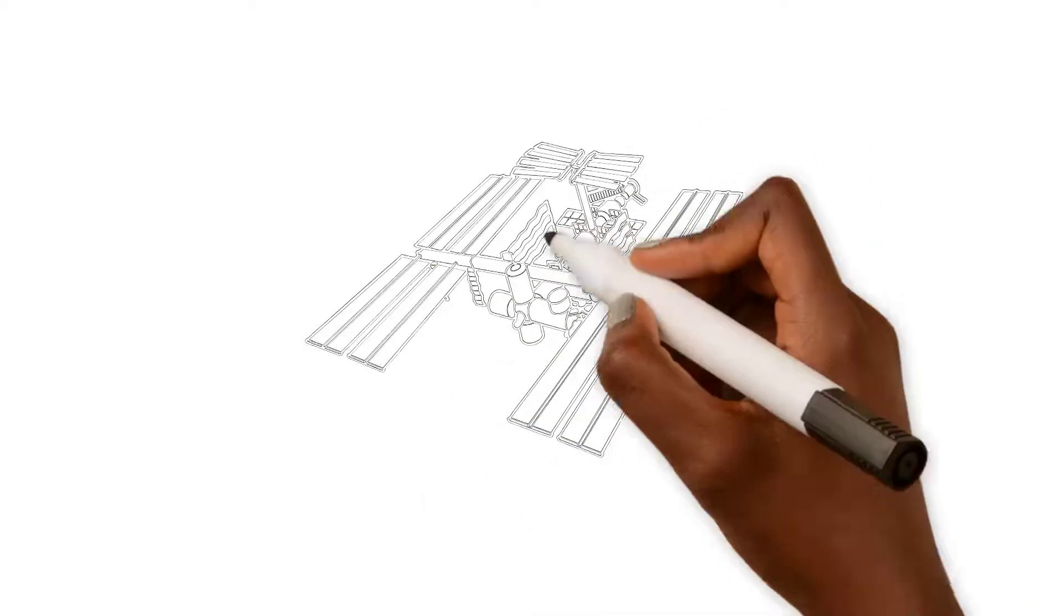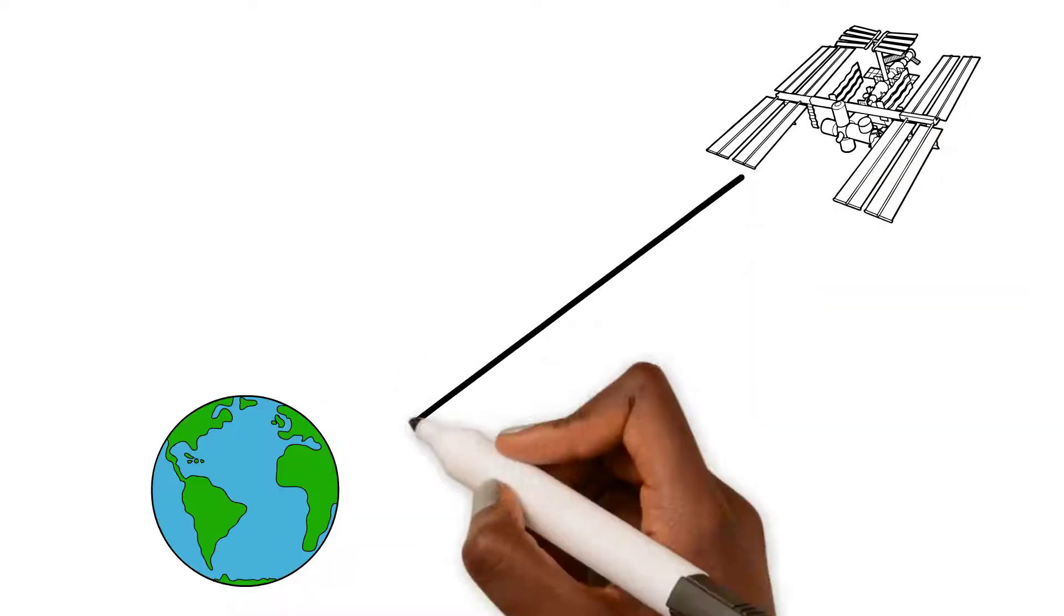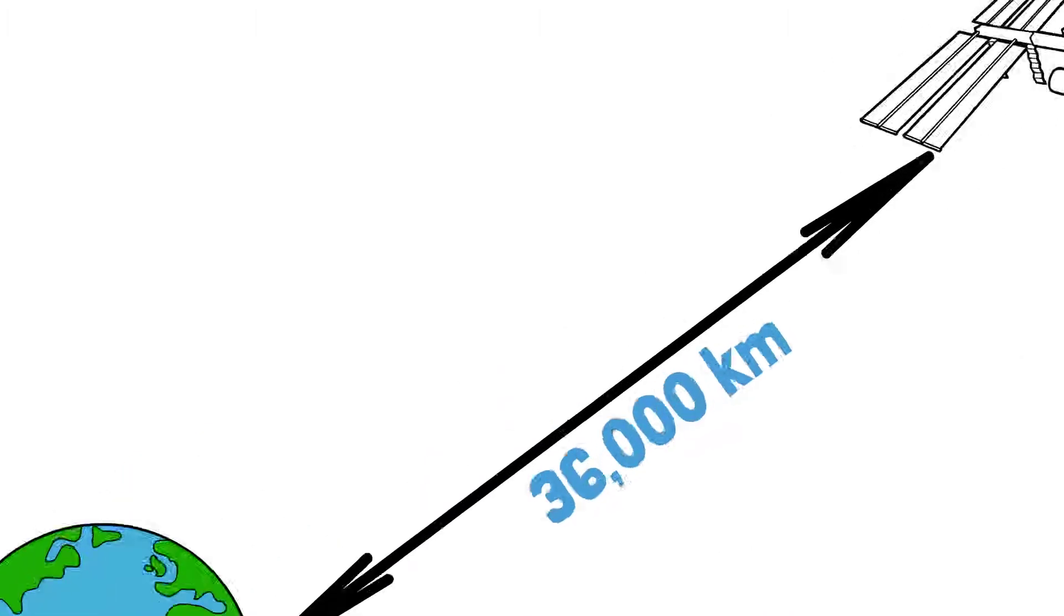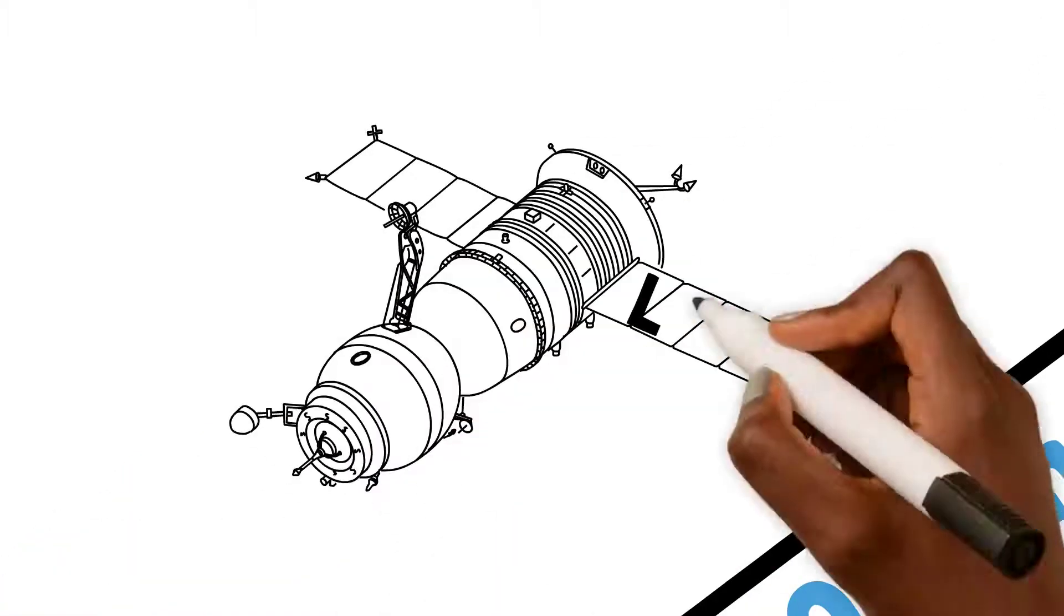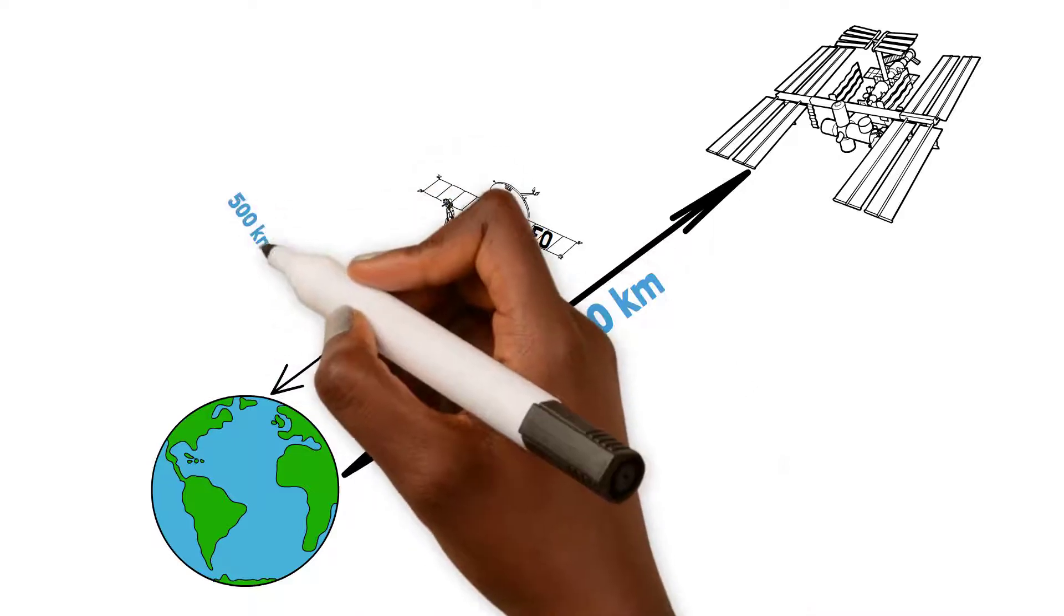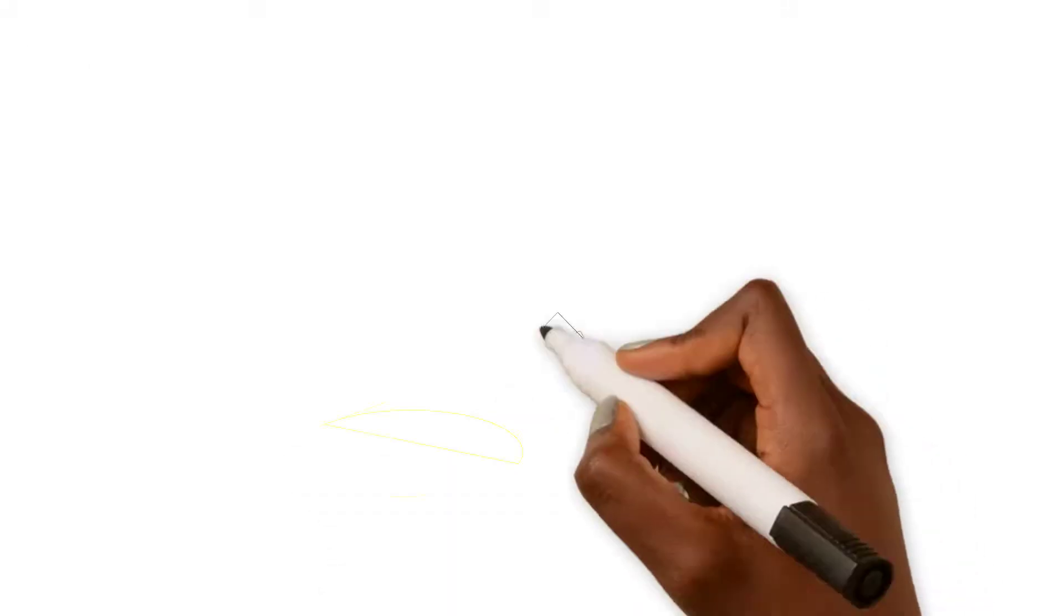Now for the satellite connections most commonly used today, the nearest point I was talking about is at least 36,000 kilometers away. LEO satellites, on the other hand, operate from 500 kilometers to 2,000 kilometers above the Earth. Since LEOs are closer to the Earth, they cover less territory.